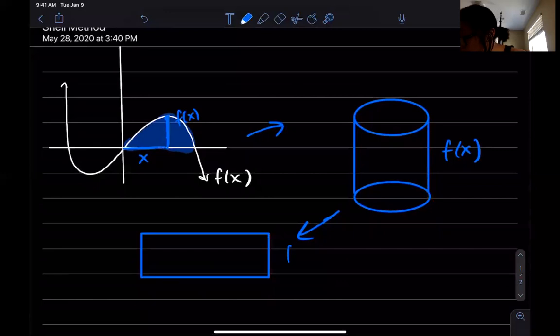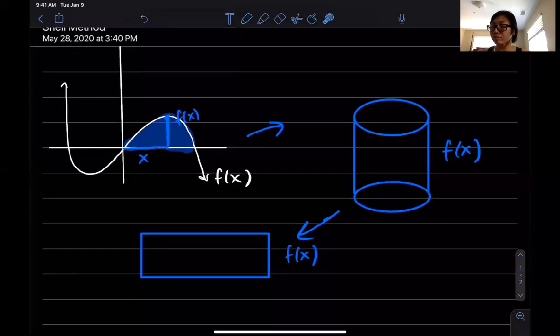What about this side up here? Let's go back to my cylinder. If I rotate this whole thing around, what I'm gonna get is this circle. What is the length, the perimeter of the circle? It's the circumference.